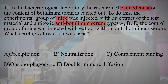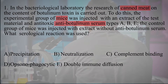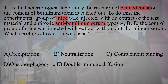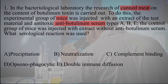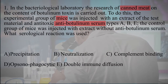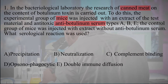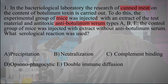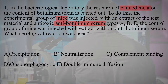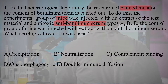What serological reaction was used? Keywords such as canned meat, botulinum toxin, and antibotulinum serum emphasize that the text is about botulism. Among the above types of serological reactions, mice are used only in the neutralization reaction. Therefore, the correct answer is a neutralization reaction.